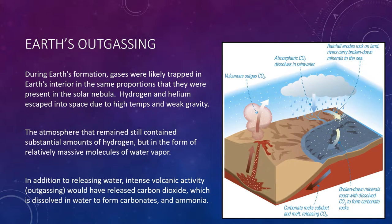When Earth first formed by accretion of planetesimals — that is, rocks slamming into each other and making a bigger rock — gases were probably trapped within the Earth's interior in the same proportions that they were present in the solar nebula, the gaseous region in which our solar system formed. But since the early Earth was hot enough to be molten throughout its volume, most of these trapped gases were released.